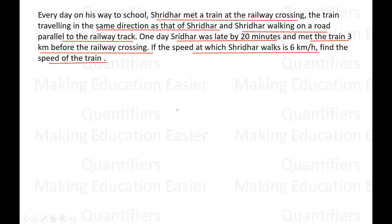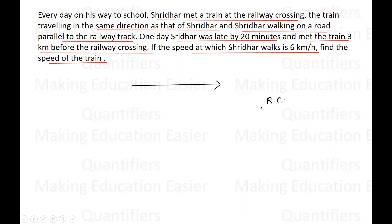Now, first of all, they are traveling in the same direction, so let's assume they are traveling in this particular direction. Generally they used to meet at the railway crossing, so I'll take this point as the railway crossing. One day when he was late by 20 minutes, he met three kilometers before the railway crossing, so I'll assume this point to be the point when they meet when Sridhar was late by 20 minutes. So Sridhar and the train are at this particular point, and this particular distance will be equal to three kilometers.